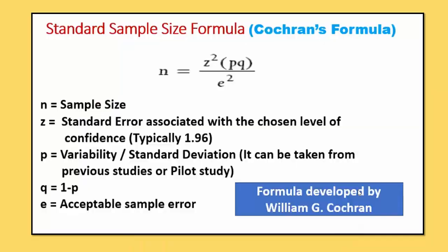Now look at the formula. What is Cochran's formula? N is equal to Z-squared, in bracket P into Q, divided by E-squared. In some books, instead of E-squared, the author uses M-squared.